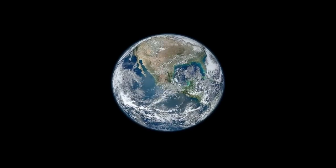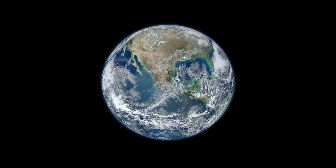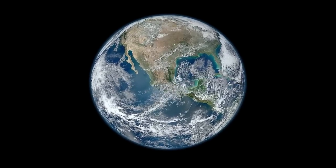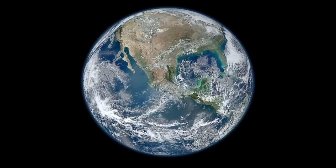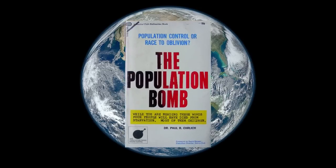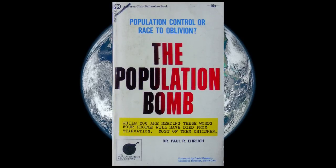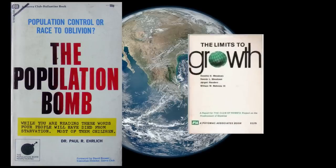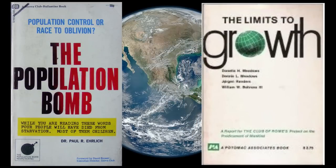Malthus's theory won supporters and has been used as an argument against efforts to better the condition of the poor. During the 20th century, environmentalists used Malthus's argument to stress that the earth cannot sustain too many people and that resources will run out unless population growth is brought under control. Famous examples are The Population Bomb written by Paul Ehrlich and the report for the Club of Rome, Limits to Growth.